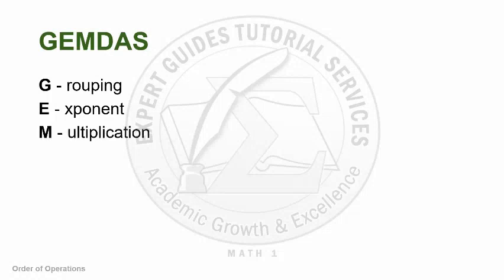To use the order of operations, we just have to follow a certain mnemonic. It is called GEMDAS. G pertains to grouping, E pertains to exponent, M multiplication, D division, A addition, and lastly S subtraction. This is also the same as PEMDAS with P being parentheses or grouping.